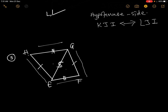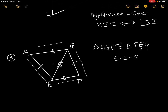Therefore, three sides of the first triangle are congruent to three sides of the second triangle. The correspondence is: HGE corresponds to FEG. The test is SSS — three sides congruent to three sides of the second triangle. The correspondence is HGE congruent to FEG.